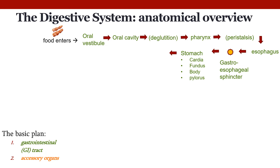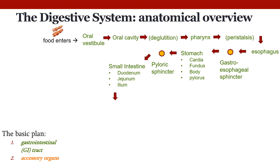Food passes through four areas of the stomach: it enters at the cardia, moves through the fundus, body, and ends in the pylorus. After the pylorus, it exits through the pyloric sphincter and moves into the small intestine, which is divided into three sections. The first section receiving food from the pyloric sphincter is the duodenum, followed by the jejunum, then the ileum. Following the ileum, food moves through the ileocecal valve and into the large intestine.